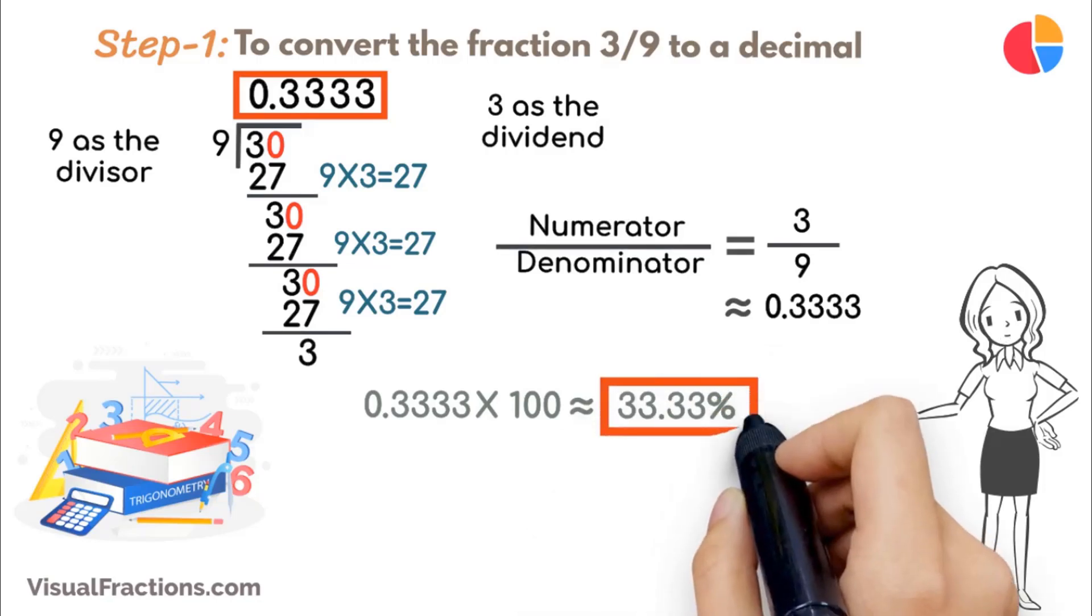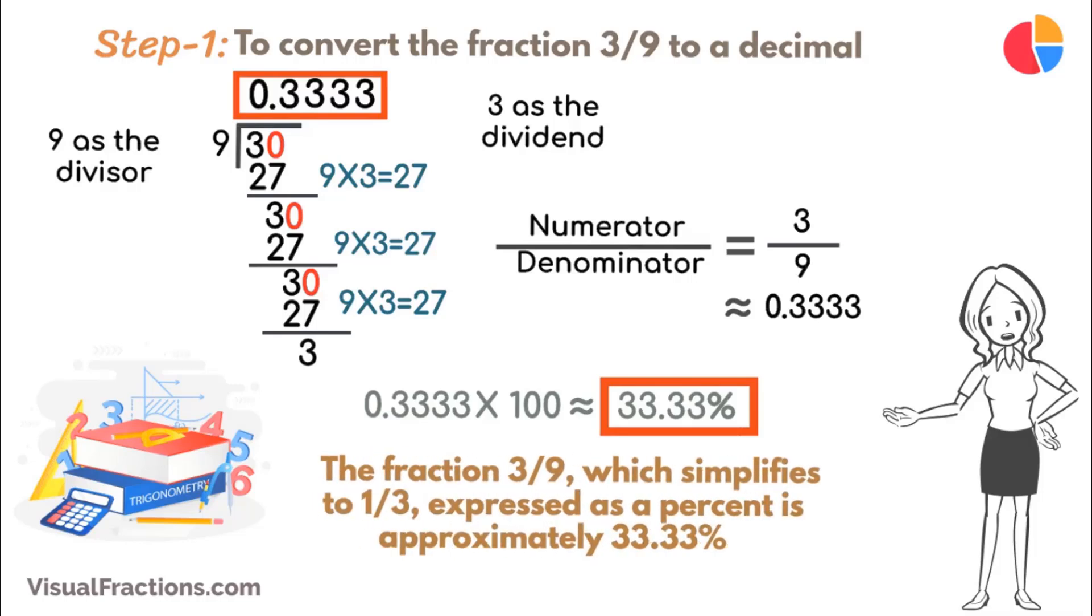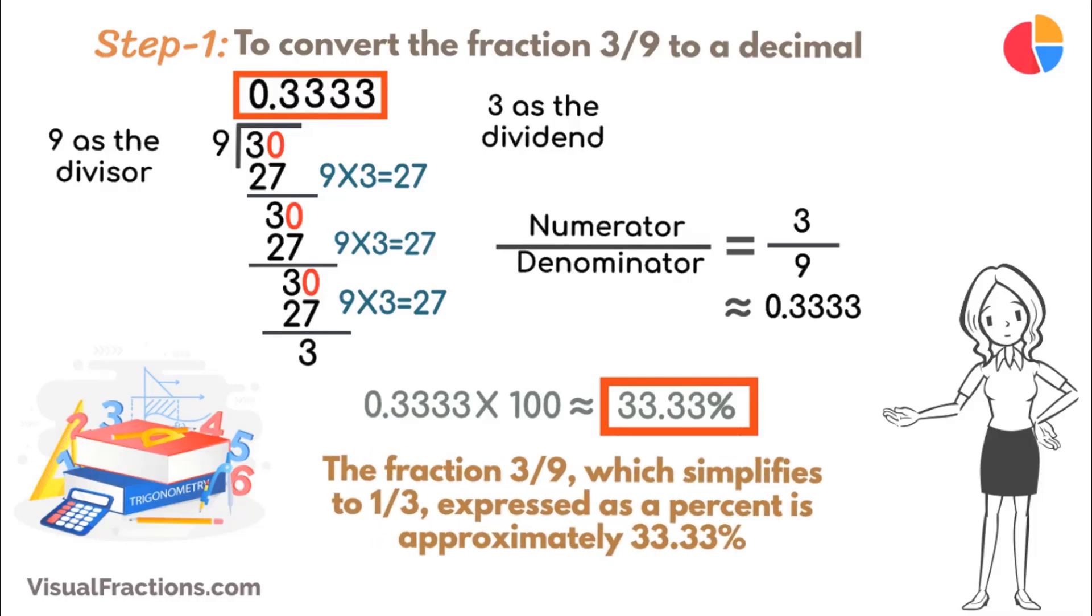So, there we have it. The fraction 3 ninths, which simplifies to 1 third, expressed as a percent is approximately 33.33%.